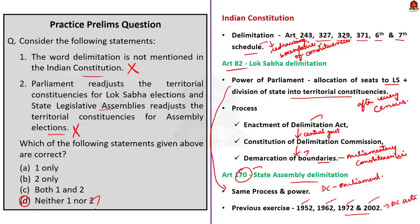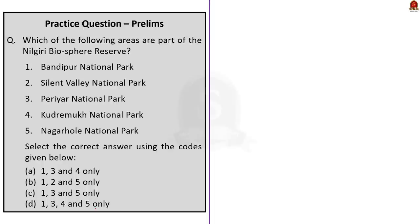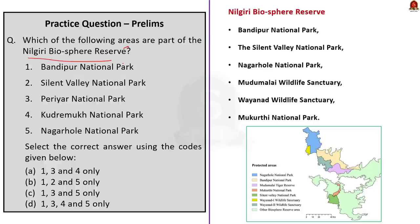The next question is about areas covered under the Nilgiri Biosphere Reserve. The Nilgiri Biosphere Reserve consists of Bandipur National Park, Silent Valley National Park, Nagarhole National Park, Mudumalai Wildlife Sanctuary, Wayanad Wildlife Sanctuary, and Mukurthi National Park. Periyar National Park and Kudremukh National Park are not included. The correct answer is option B, 1, 2, and 5 only.